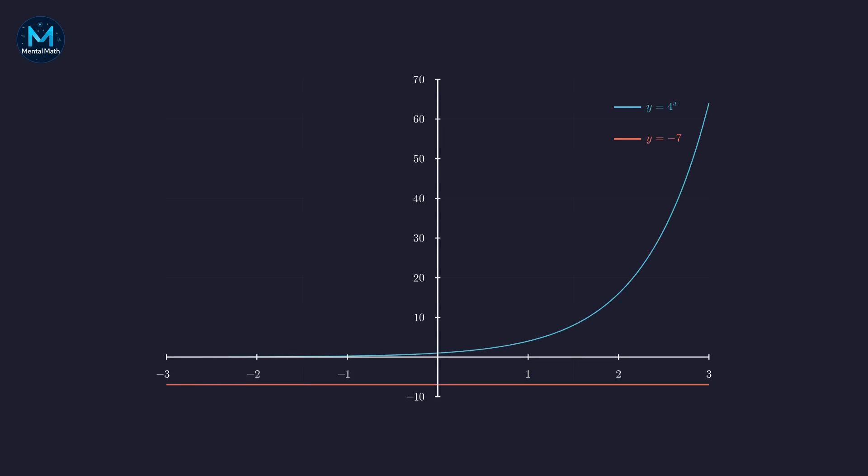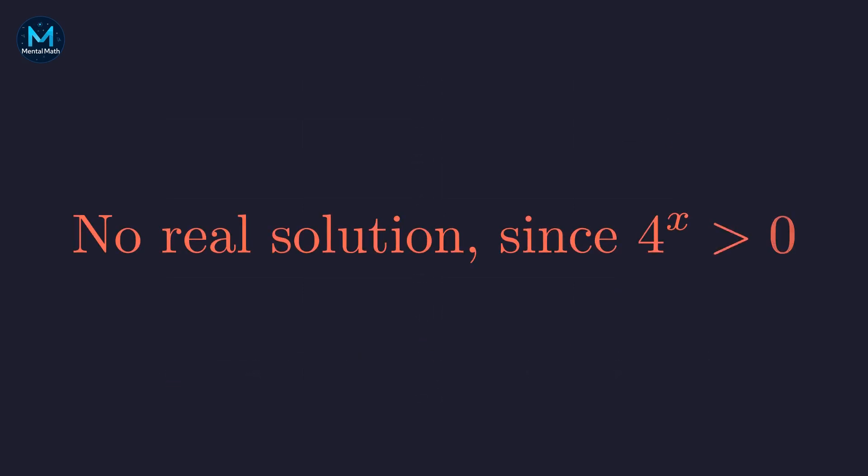The blue curve is 4 to the x, growing exponentially. The red line is y equals negative 7. Notice something crucial. The blue curve never goes below 0. 4 to the x is always positive, no matter what x is. These graphs never meet.